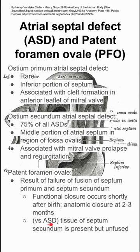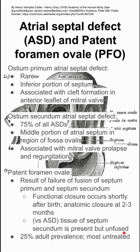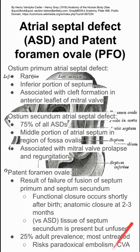In comparison to an atrial septal defect, a patent foramen ovale has the tissue present — the tissue of the septum secundum is there, it's just not fused. 25% of adults have a patent foramen ovale, and it's largely untreated. This risks having paradoxical embolisms, which can cause strokes.